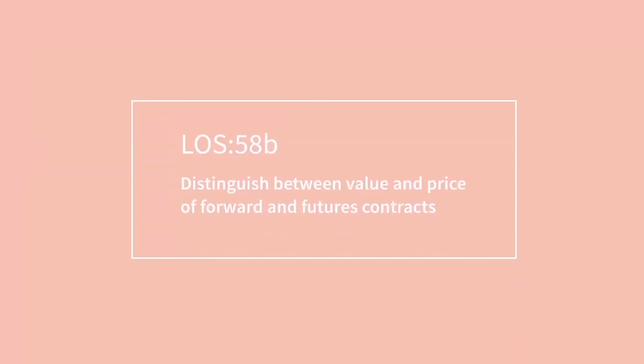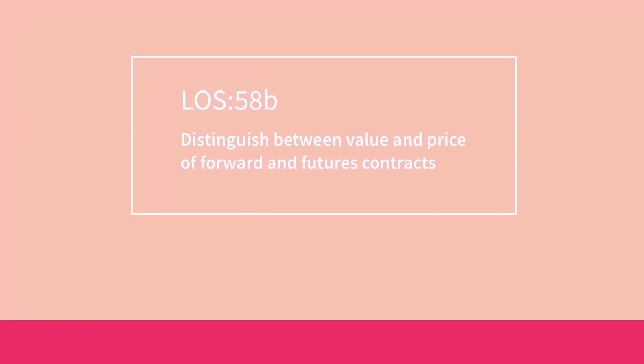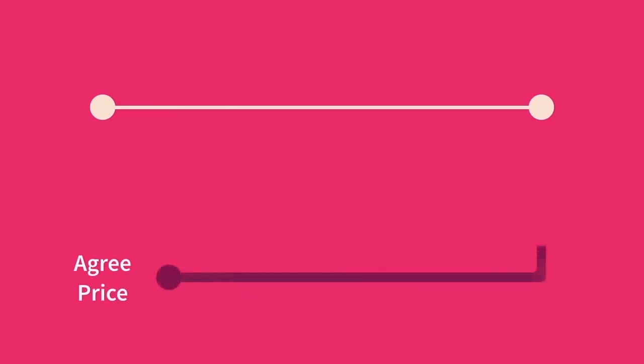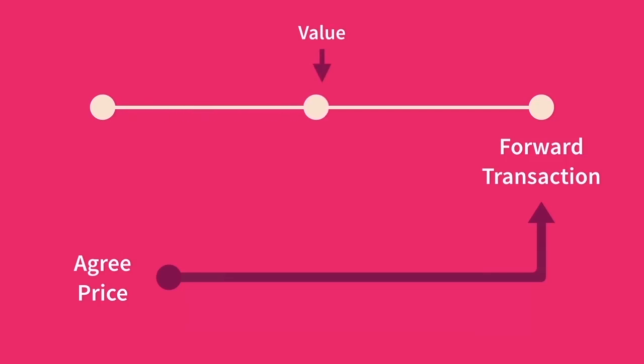Distinguish between value and price of forward and futures contracts. When we talk about price and value with futures and forward contracts, it's important to understand the terminology correctly. When I say price, I mean the contracted forward price — the price we have agreed to transact at in the future. When I talk about value, I mean the amount that either party stands to gain or lose if the contract expired right now.